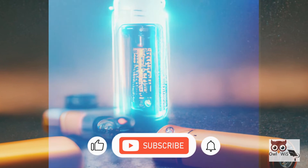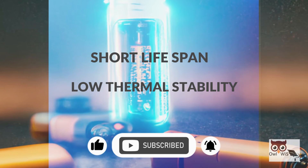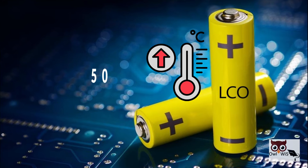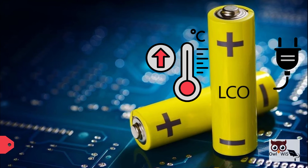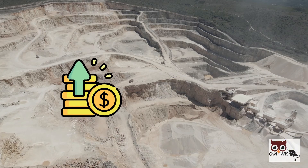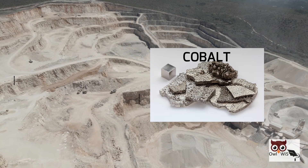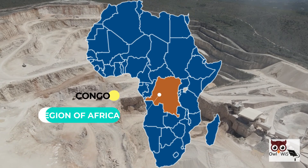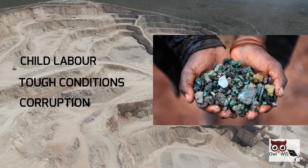The drawbacks of LCO batteries include a relatively short lifespan and low thermal stability. In cases of abuse, such as high temperature operation above 150 degrees Celsius or overcharging, LCO batteries can undergo thermal runaway resulting in fire. Also, the price of cobalt is very high — cobalt is a by-product of nickel and copper mining, making it harder to obtain. Most cobalt is produced in the Congo region of Africa, which is associated with child labour, tough conditions, and corruption.